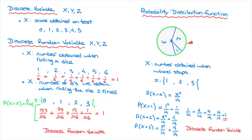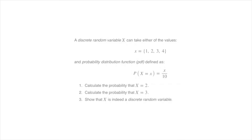Now that we've defined what a discrete random variable is as well as what a probability distribution function is, let's work through a typical quiz-type question. We're told that a discrete random variable capital X can take on either of the values 1, 2, 3, or 4, and has a probability distribution function — often referred to as a PDF — defined by P(X=x) = x/10. We're asked to calculate P(X=2), P(X=3), and then show that capital X is indeed a discrete random variable.